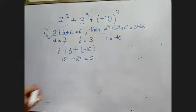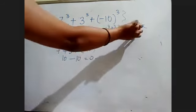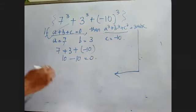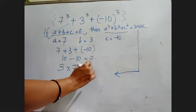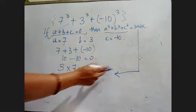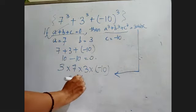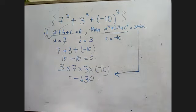And now, what I have to do? This a³ + b³ + c³ that is given here—how to find its value? Just calculate 3abc. 3 × 7 × 3 × (-10). 3 × 3 = 9, 7 × 9 = 63, 63 × (-10) = -630. Hope this thing is clear to everyone.